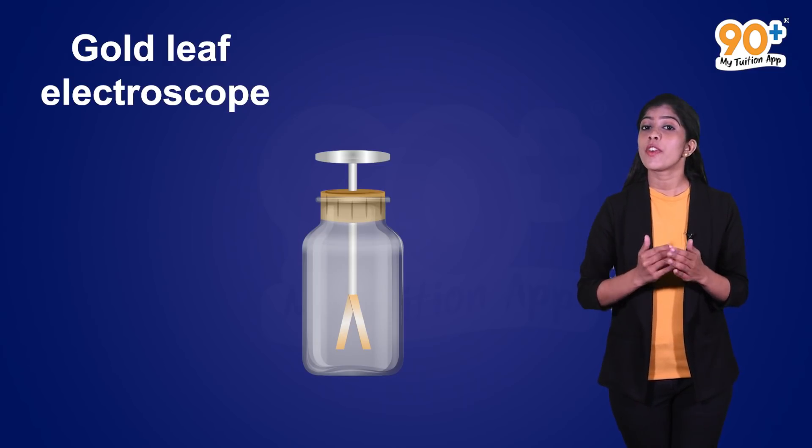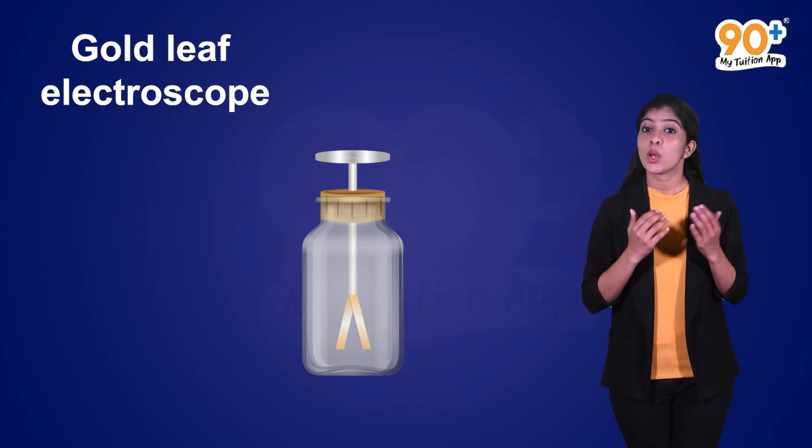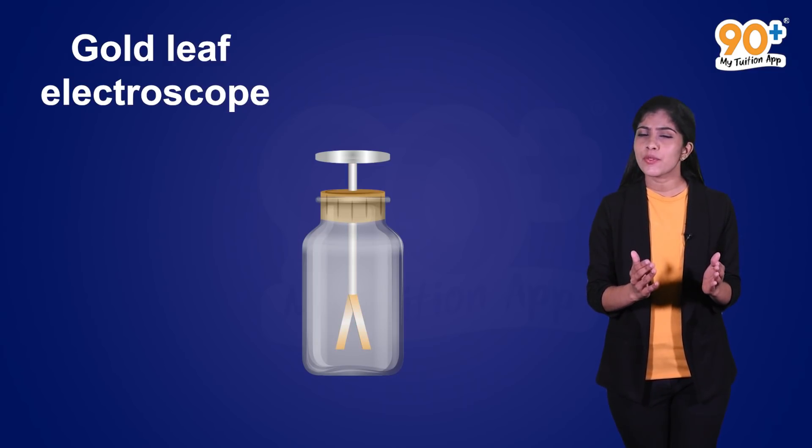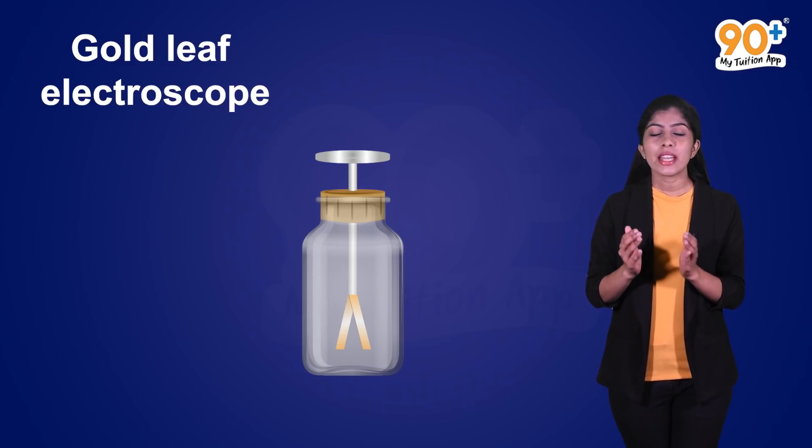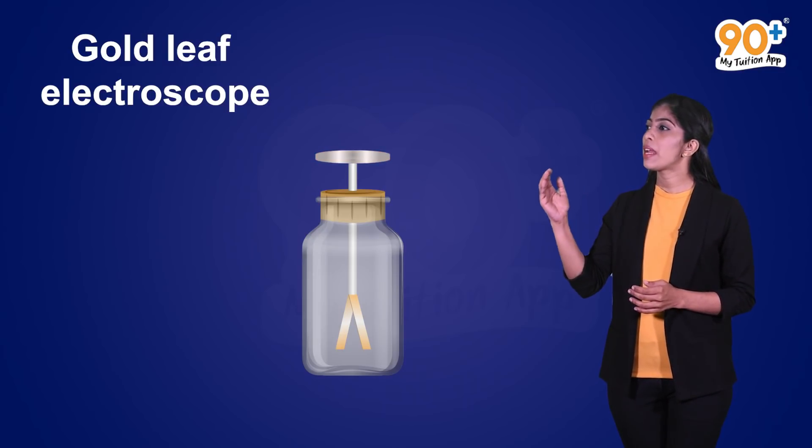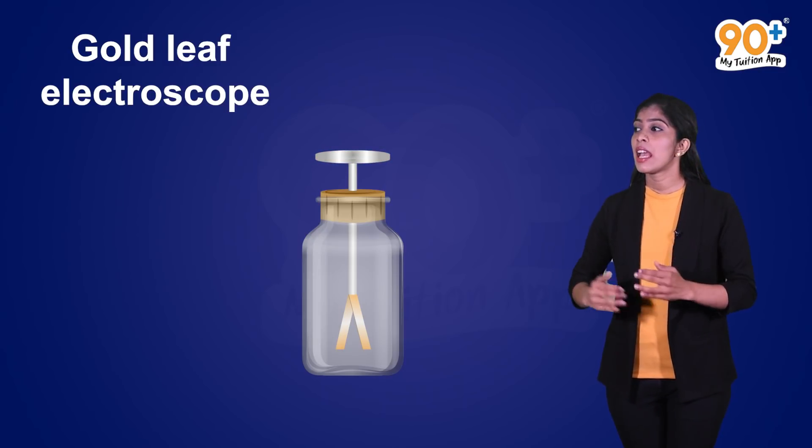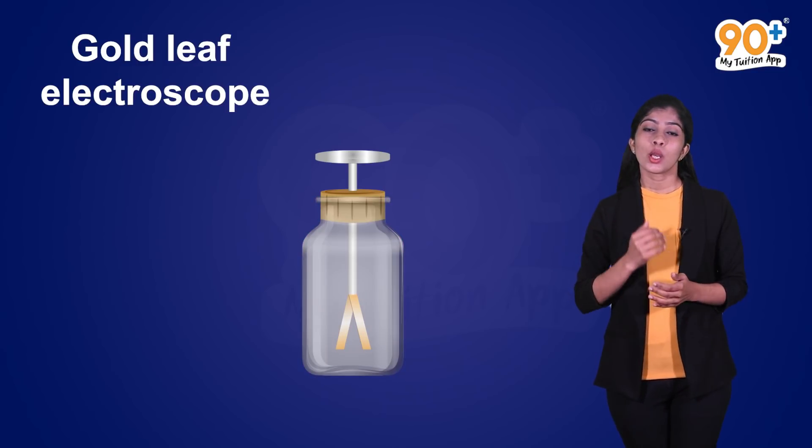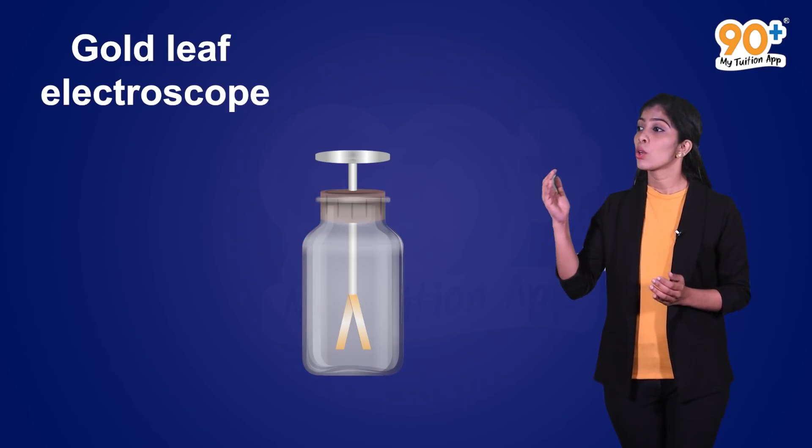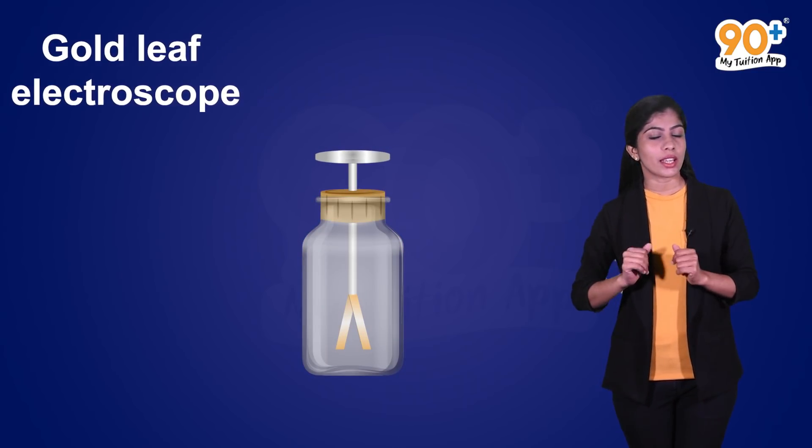It consists of an insulated metal rod with two gold leaves or foils at one end and a metal disc at the other end. This setup is enclosed in a glass jar with the help of a tight cork with a disc placed outside the jar.